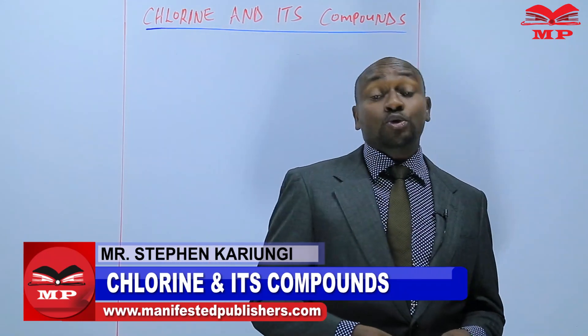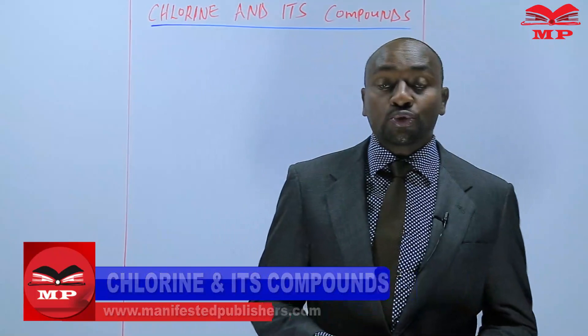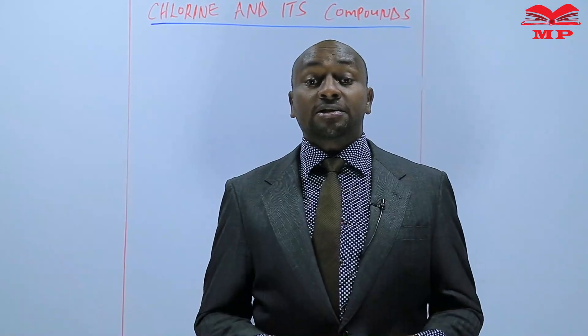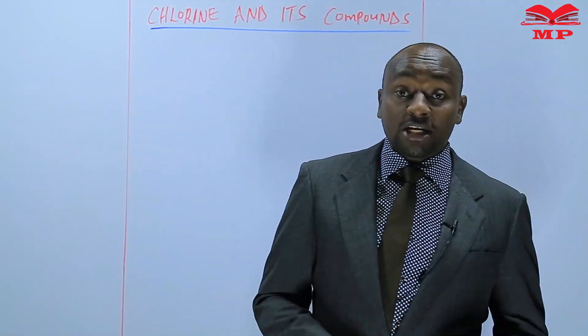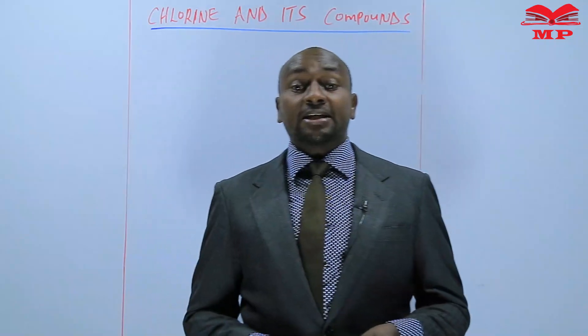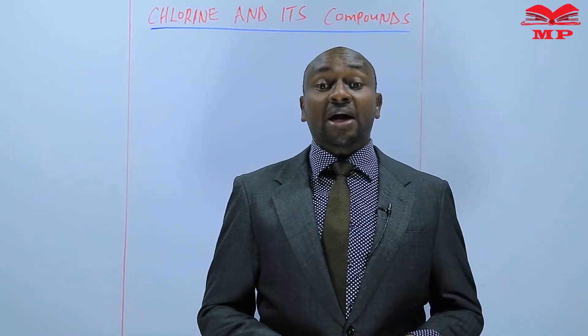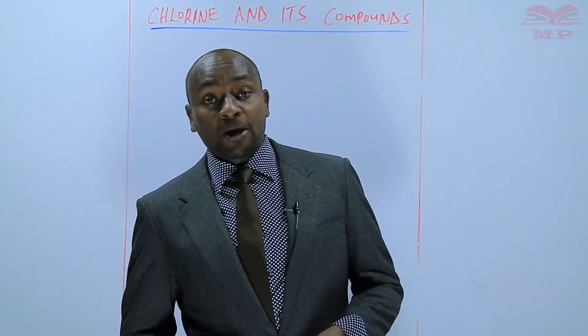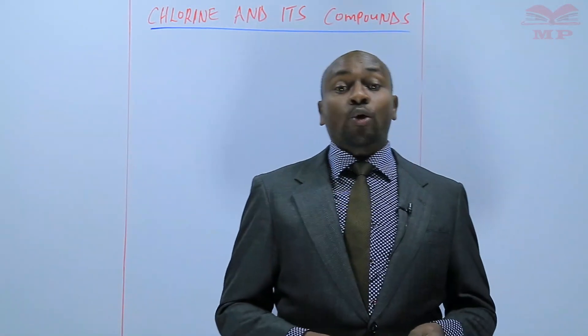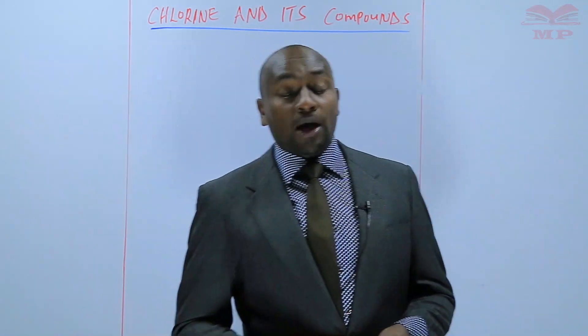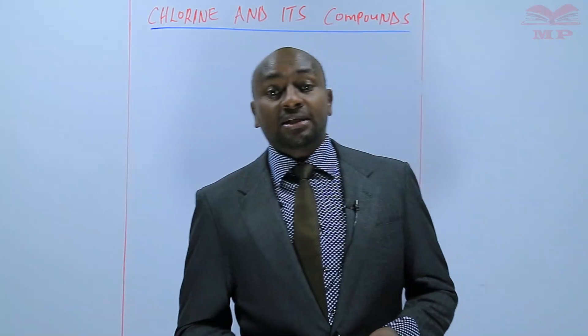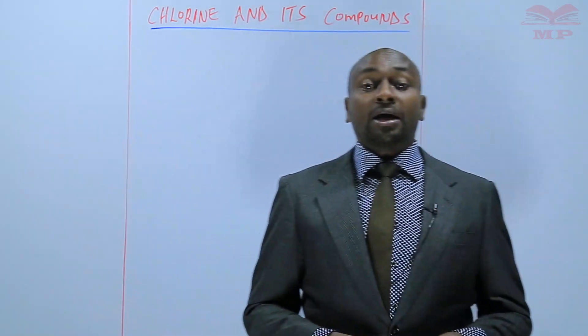Last lesson, we learned about one method that can be used to prepare chlorine gas, and that is oxidation of concentrated hydrochloric acid using manganese four oxide, which we said requires heating. Now, there are other methods that can also be used to prepare chlorine gas.